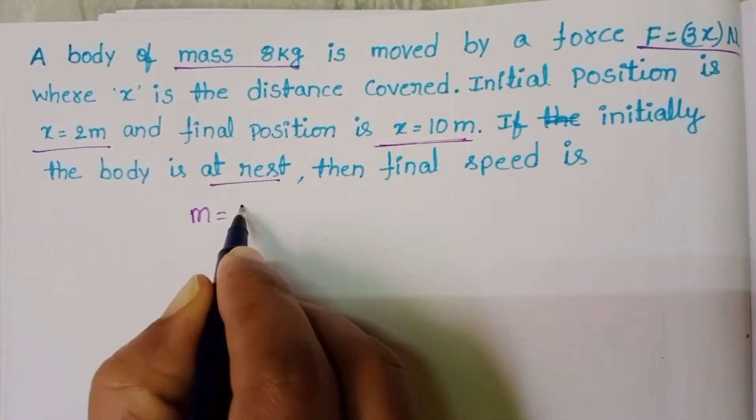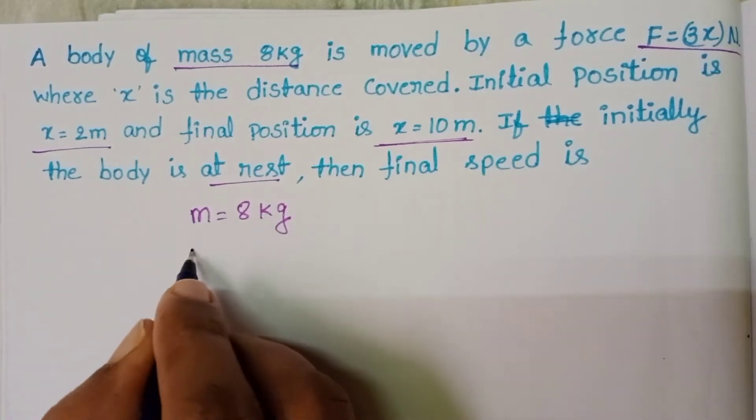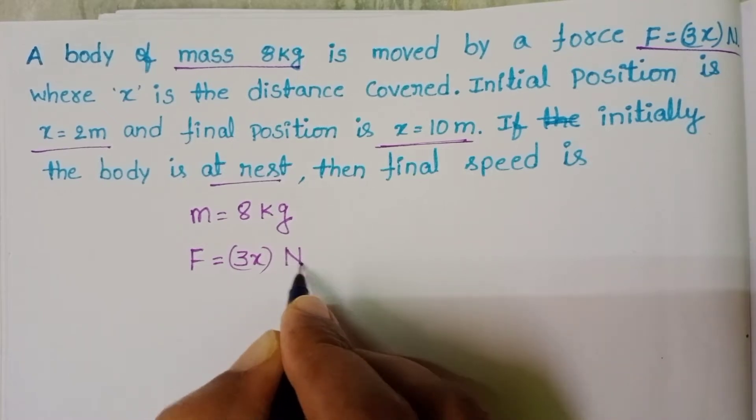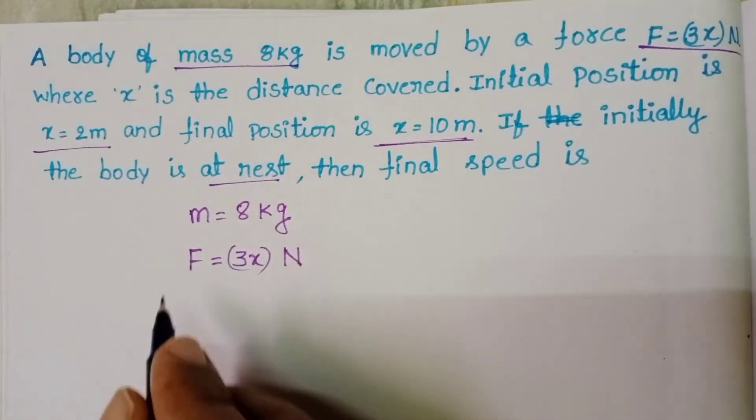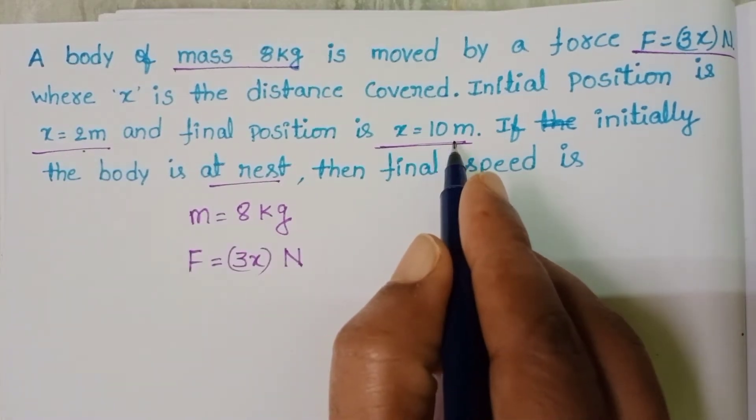Mass is 8 kg and this body is moved with a force F equals 3x newton. Force is a function of x. Initially the position of the body is at 2 meter and final position is 10 meter.